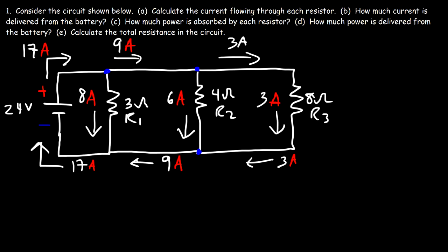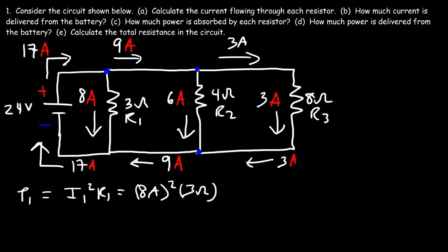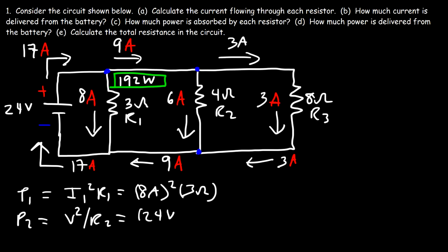Now let's calculate how much power is delivered by the battery and absorbed by each resistor. For R1, using I1 squared times R1: 8 amps squared is 64, times 3 ohms gives 192 watts. For R2, using V squared divided by R: the voltage across every resistor in a parallel circuit is the same — 24 volts — divided by 4 ohms. 24 squared is 576, divided by 4, so 144 watts of power is consumed by the second resistor.